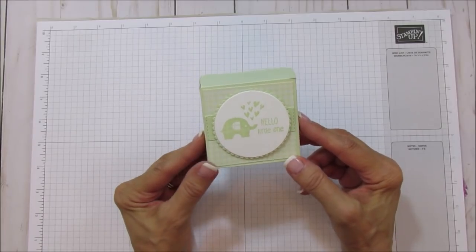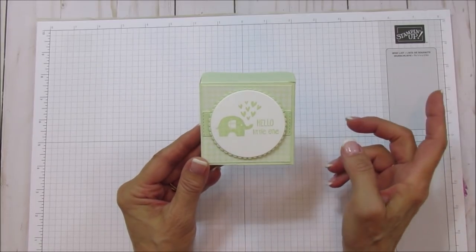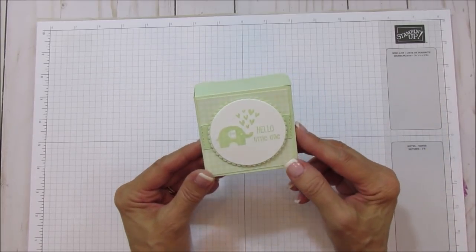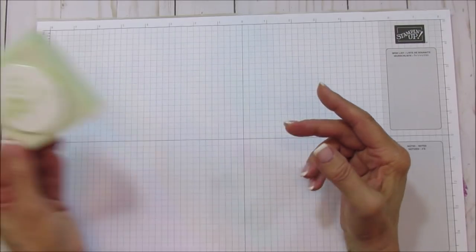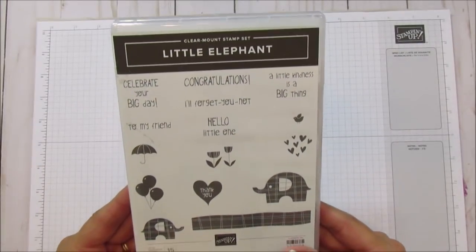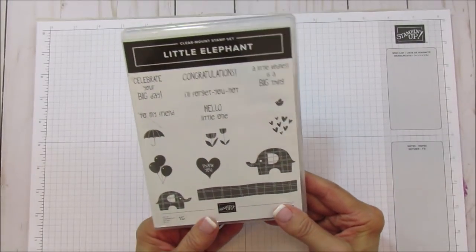Baby things have been on my mind, but I haven't done a baby box in a while, so I thought I'd share this one with you. Today we're using the Little Elephant stamp set. It's super adorable and it's in our annual catalog.